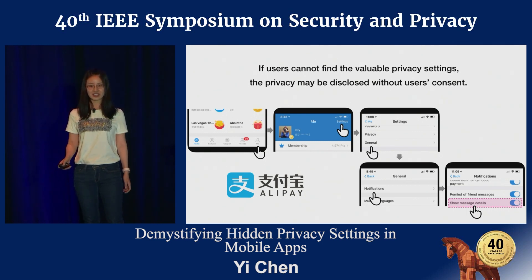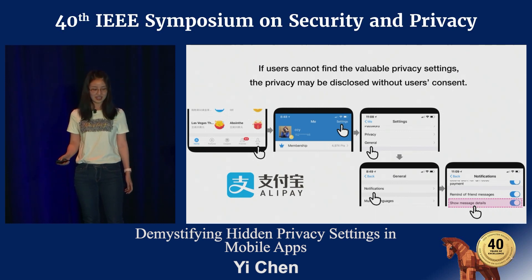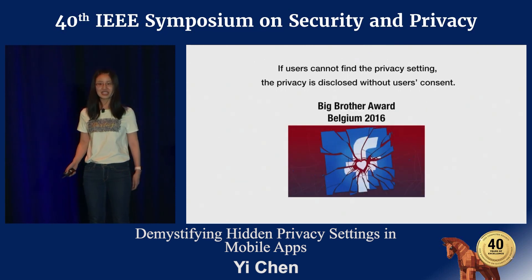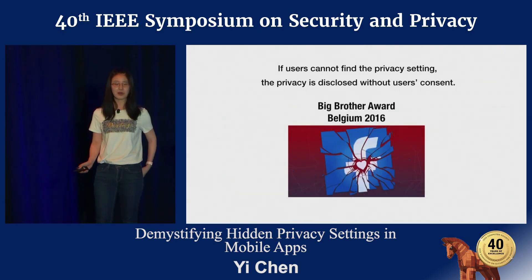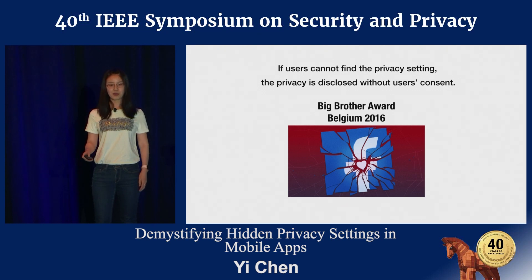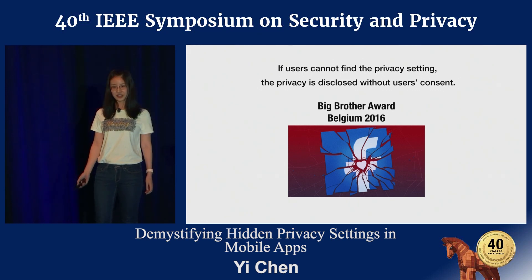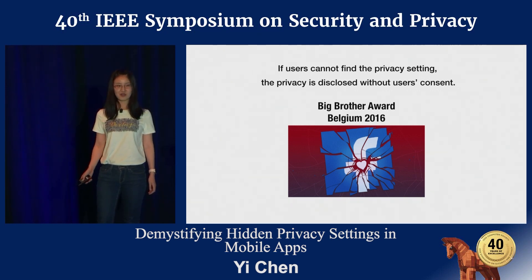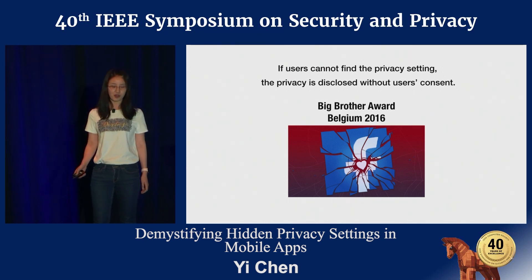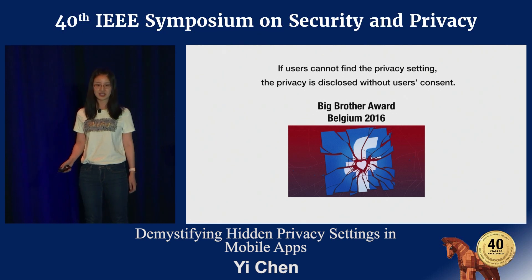In our work, we call this hard-to-find privacy setting a hidden privacy setting. Besides Alipay, we also found this problem in other apps such as Facebook. In 2016, Facebook was even given a Big Brother Award as the biggest privacy offender of the year because of hidden privacy settings.